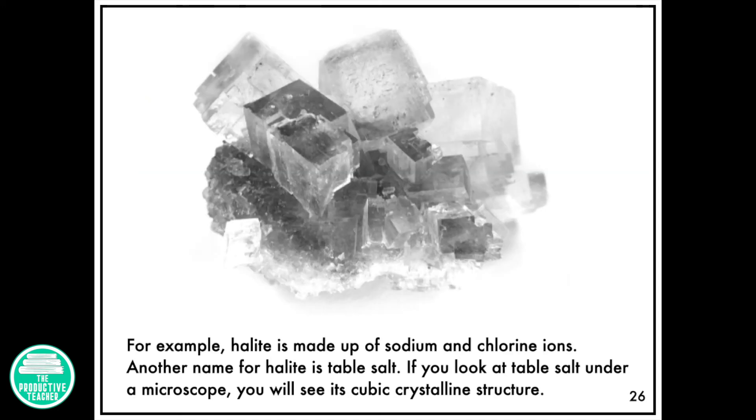For example, halite is made up of sodium and chlorine ions. Another name for halite is table salt. If you look at table salt under a microscope, you will see its cubic crystalline structure.